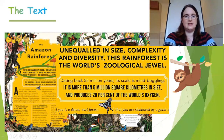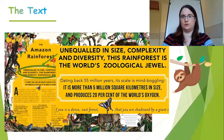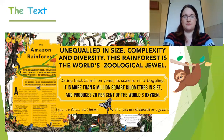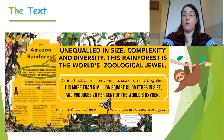We're right on this first section here. We've got the main heading — The Amazon Rainforest — and then our opening section, which says: 'Unequalled in size, complexity and diversity, this rainforest is the world's zoological jewel.' Then it says: 'Dating back 55 million years, its scale is mind-boggling. It is more than 5 million square kilometres in size and produces 20% of the world's oxygen.' So that gives a general overview of why the Amazon rainforest is so important — it's like an introductory section.